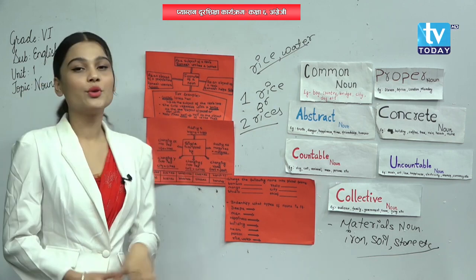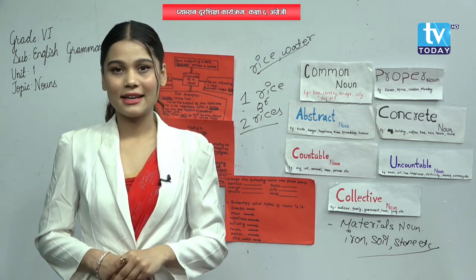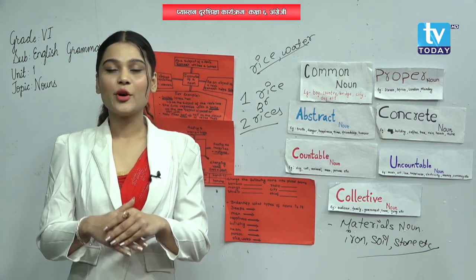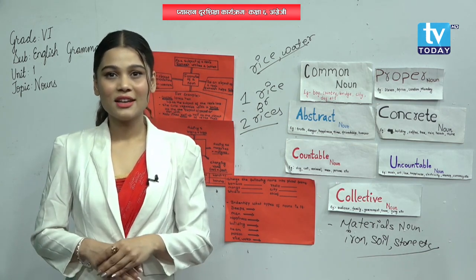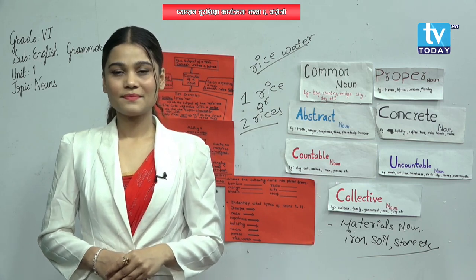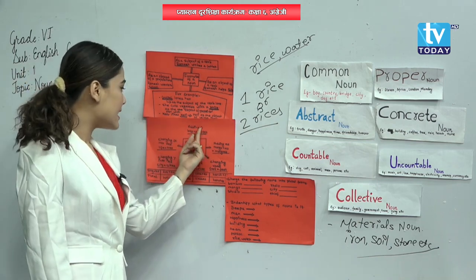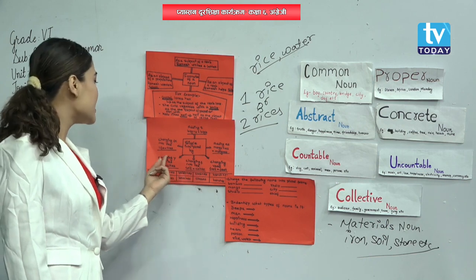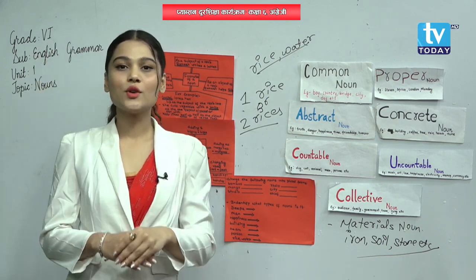Now we will discuss singular and plural noun. What is singular and plural noun? Singular noun defines a single thing, and plural noun defines many things. 'A boy' — that means singular noun. 'Boys' — that means plural noun. How to change singular noun into plural noun? By adding 's,' adding 'es,' changing the vowel, changing 'f' into 'ves,' changing 'y' into 'ies,' and changing 'fe' into 'ves.'